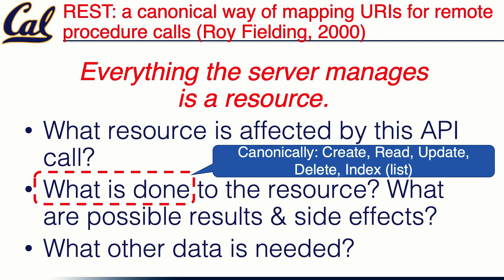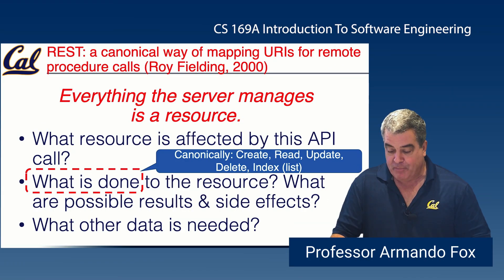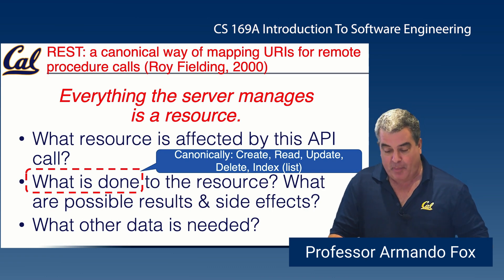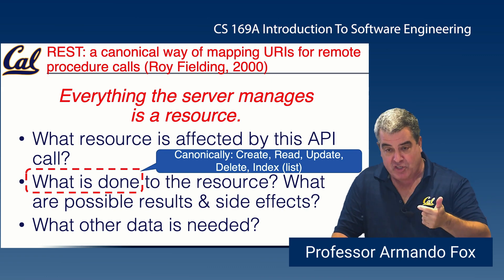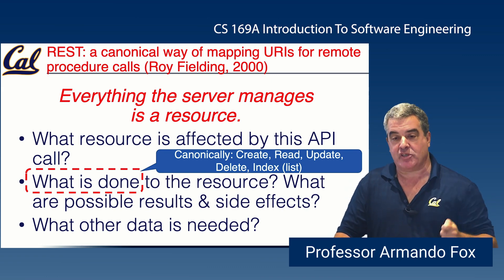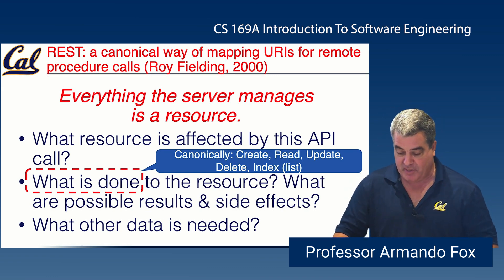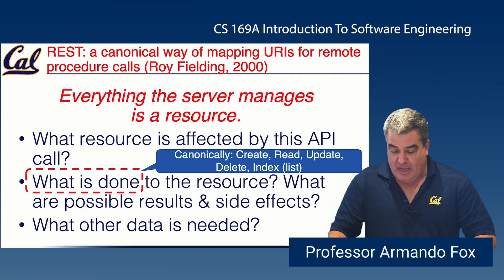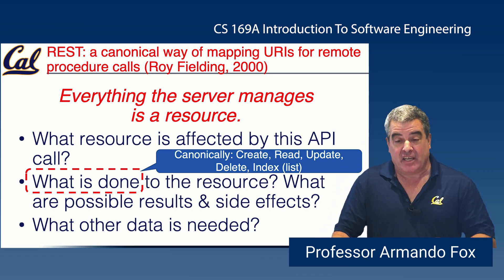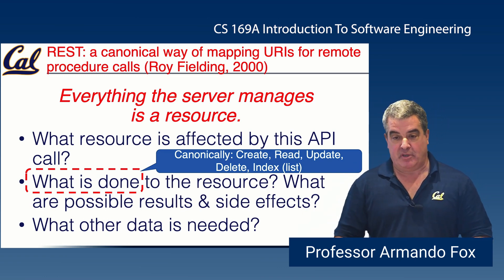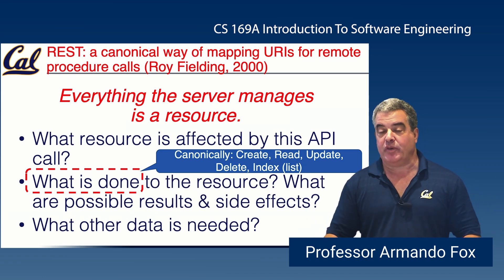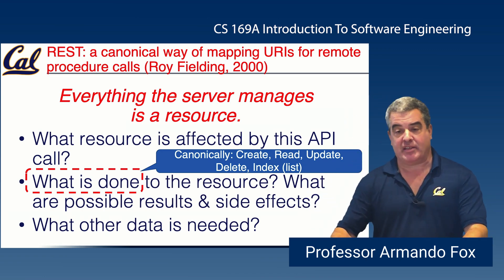In the purest form of REST, a resource either exists or it doesn't, so there are really only a few things you can do: you can create a new instance of a resource, read it (get a copy), update it (change some part of it, for example changing the name or address of a person resource), delete the resource, or ask for a list — a collection of all resources of a certain type. For example, in IMDb a movie is a resource, and a list of all movies would be an example of requesting a collection of that resource type.